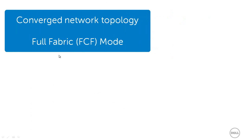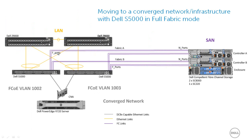Now let's take a look at an S5000 full fabric, or FCF, topology. You can see there are no longer any fiber channel switches connecting to the S5000. The S5000 is connecting directly to the Compellent storage array via fiber channel ports, and it is providing the full fabric services like the name server and zoning.